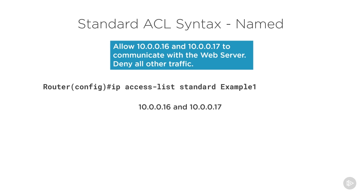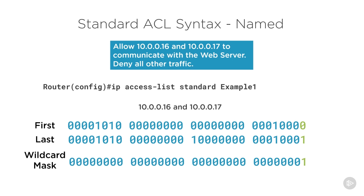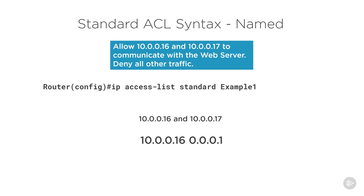We're going to build our access list called 'example 1' using named ACL commands. The range of addresses is 10.0.0.16 to 10.0.0.17. Writing those in binary, the only bit that changes is the very last bit — all other bits are identical. So the wildcard mask is 0.0.0.1, meaning we can represent this range as 10.0.0.16 with wildcard mask 0.0.0.1.